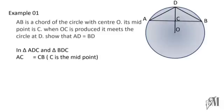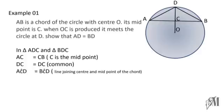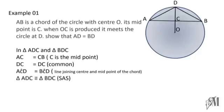You can clearly see that AC is equal to CB because C is said to be the midpoint, and DC is common to both triangles. According to the theorem, the line OC is perpendicular to AB, so angle ACD is equal to angle BCD. Therefore the two triangles ADC and BDC are congruent under the case SAS. Therefore the side AD is equal to the side BD because they are corresponding sides of congruent triangles.